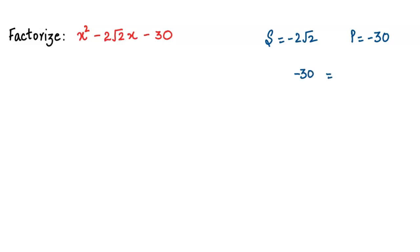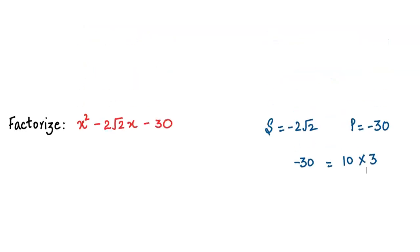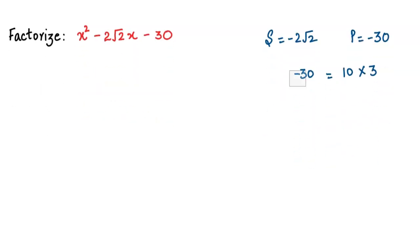We have 10 times 3. Let's write the factor pairs of 30 and we'll put the negative sign later. 5 into 6, then 15 into 2, and 30 into 1. But none of these seem to serve our purpose because in the sum we have √2.